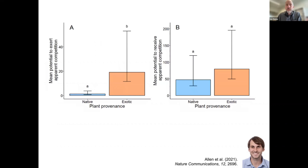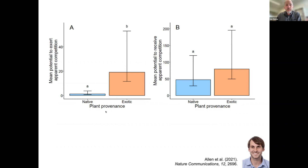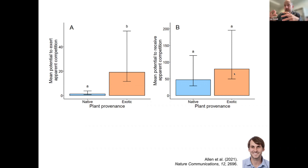We also looked at the network using Potential for Apparent Competition (PAC), which measures the chance of a plant increasing an herbivore that could attack another plant. What that showed was that exotic plants had a very high potential to exert apparent competition and a slightly higher chance of receiving it — again indicating generality, since the herbivores increasing on exotic plants are those likely to affect other plants.